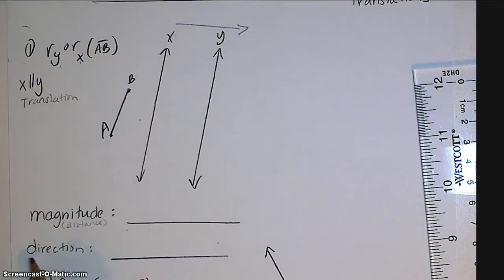Obviously, we know direction means which way we're traveling. In magnitude, you can think of this as the distance that you're traveling by, or how far you are actually translating.